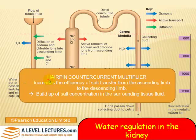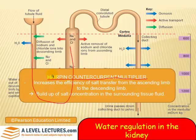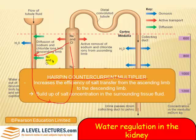This is what's called a hairpin counter-current multiplier — that's a key term. Let's think about the words: hairpin is a shape — it's this sort of U-shape, like a hairpin. Counter-current: the current is flowing in this direction, but we've got movement of salts in the opposite direction — going against the current — and it's multiplying the concentration of salts. So: hairpin, counter-current, multiplier. If you break it down into the words, you'll understand more what it's about. It increases the efficiency of salt transfer from the ascending limb into the descending limb, and this builds up the salt concentration in the surrounding tissue fluid.